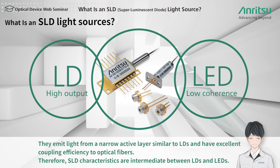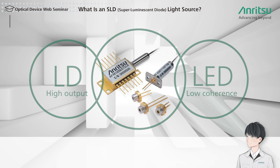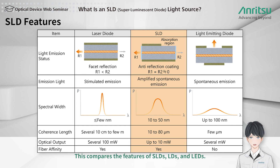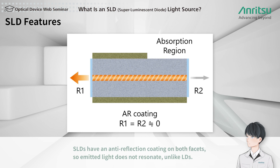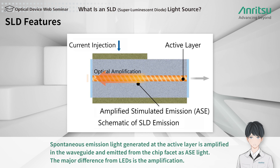SLD characteristics are intermediate between LDs and LEDs. This compares the features of SLDs, LDs, and LEDs. SLDs have an anti-reflection coating on both facets so emitted light does not resonate. Unlike LDs, spontaneous emission light generated at the active layer is amplified in the waveguide and emitted from the chip facet as ASE light. The major difference from LEDs is the amplification.